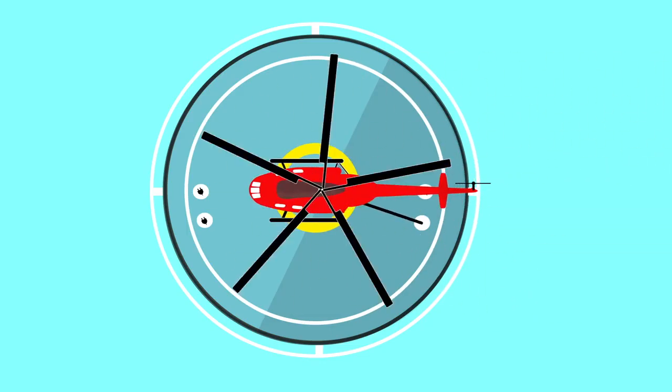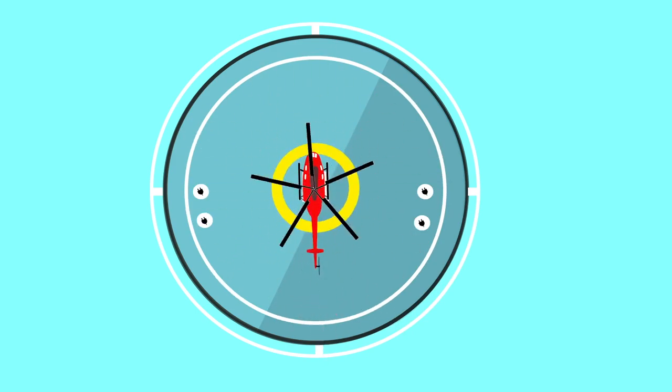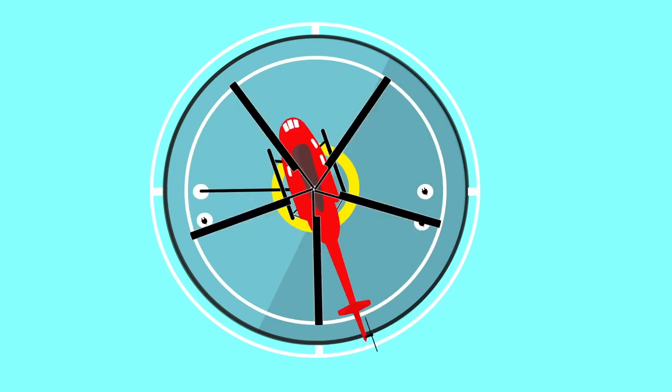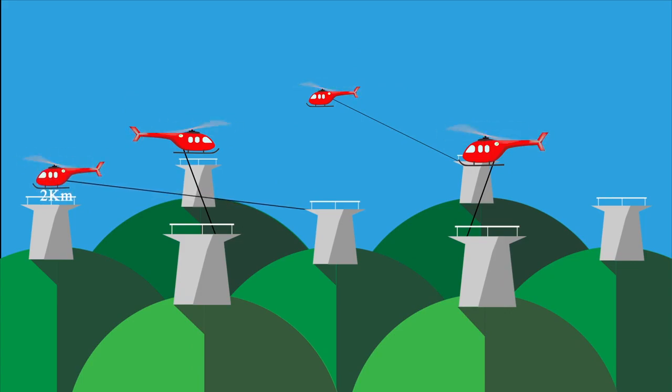It consists of a helipad and multiple cables. Kevalcopter lands on helipad and changes the cable to move towards another tower. These towers are placed one kilometer apart from each other, creating a heli network.